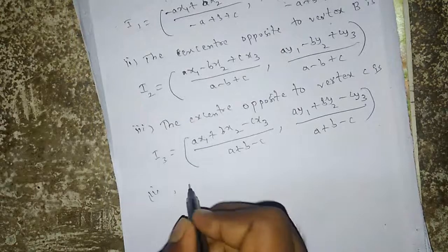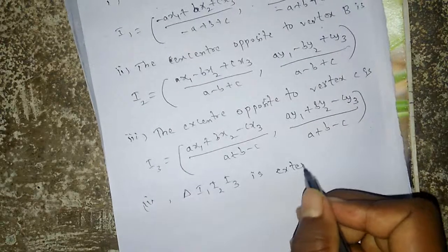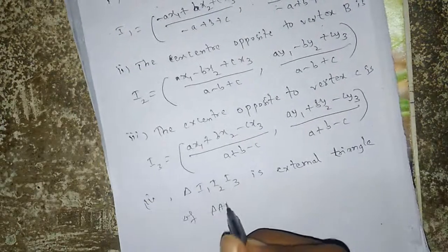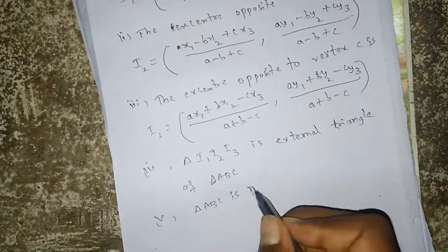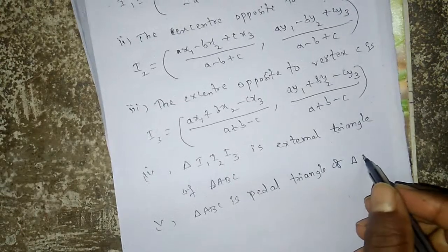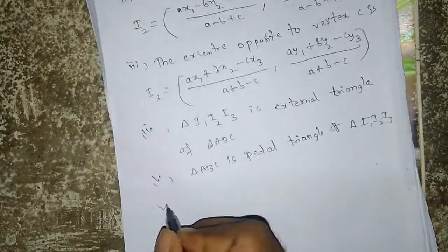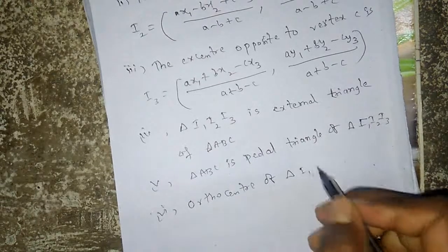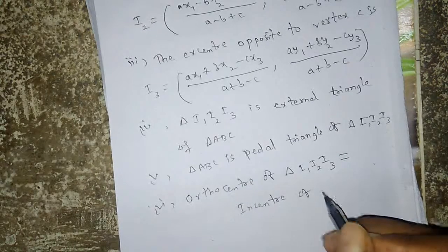Triangle I₁I₂I₃ is the external triangle of triangle ABC, and triangle ABC is the pedal triangle of triangle I₁I₂I₃. The orthocenter of triangle I₁I₂I₃ is the same as the incenter of triangle ABC.